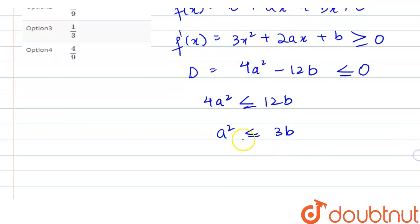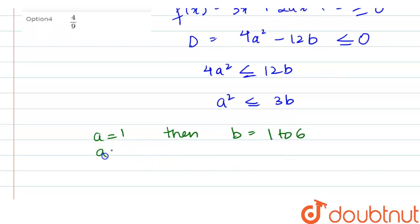For this equation, when a = 1, then the range of b lies from 1 to 6. Similarly, if a = 2, then the value of b lies from 2 to 6.